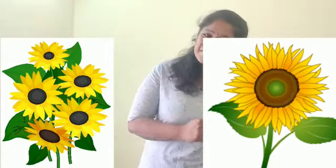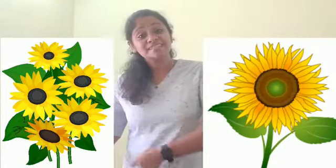Let us see a sunflower, bright yellow sunflower. It is called a happy flower. Let us see a sunflower.